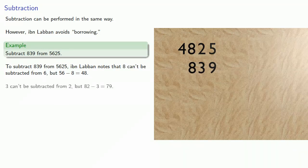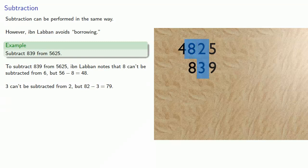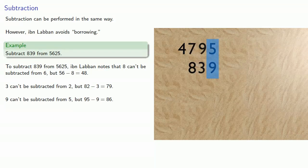Again, 3 can't be subtracted from 2, but 82 minus 3 is 79. 9 can't be subtracted from 5, but 95 minus 9 is 86.